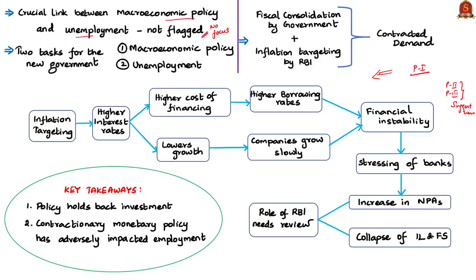The author raises concern that the crucial link between macroeconomic policies and the present state of unemployment has not been focused on in any heated debates on jobs. He stresses that the two immediate tasks of the new government should be to focus on an employment-based macroeconomic policy. Fiscal consolidation measures and inflation targeting of the present government are inherited from the previous government. High inflation around 2012-13 was partly due to abnormal hikes in procurement prices, making the then government target inflation.